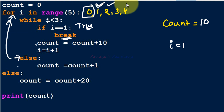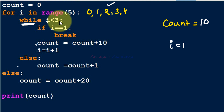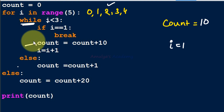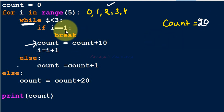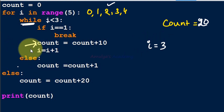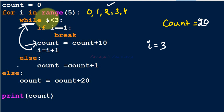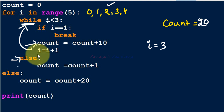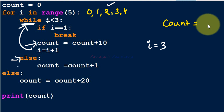Control goes back to the for loop and i is now 2. We check while 2 < 3 — true. We check if i == 1: 2 != 1, so we execute count = count + 10; count goes from 10 to 20. Then i increments to 3. Now we check while 3 < 3 — false — so we exit the while loop and execute its else block. Count is incremented by 1, so count becomes 21.